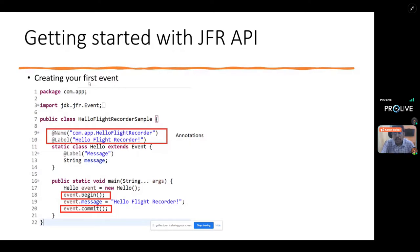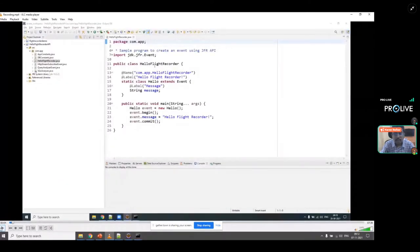You can also specify an optional message parameter in your event class, which lets you log a message and helps you understand how the Flight Recorder API captures certain events. This is a simple example. Let me show it through code — I've created a short recording of a demo. Here is the same Flight Recorder class, and I've created a class called Hello which extends the base Event class.